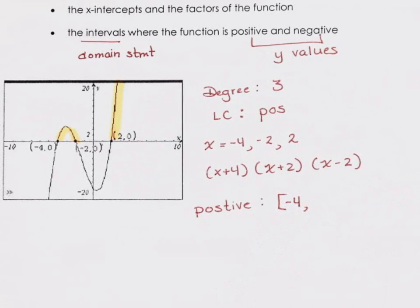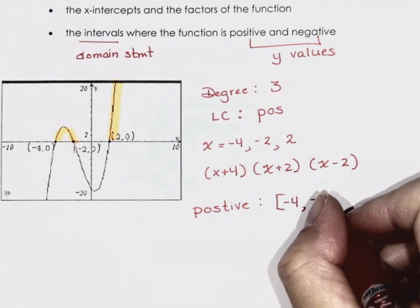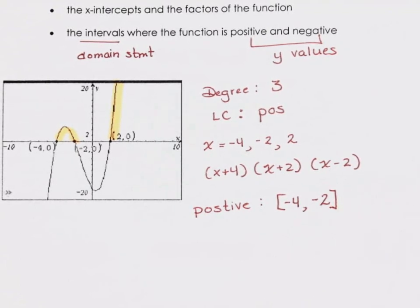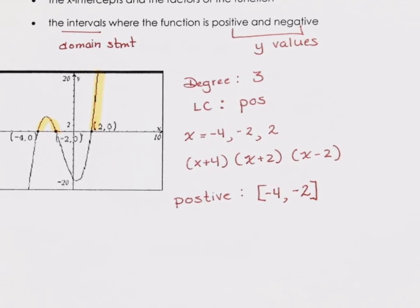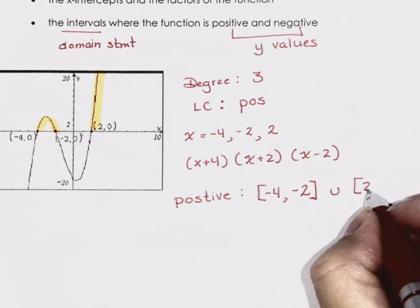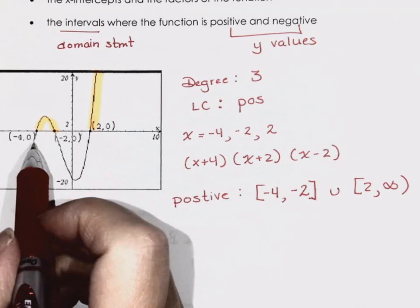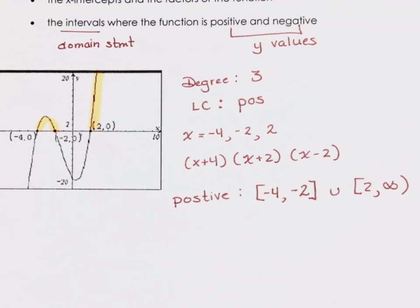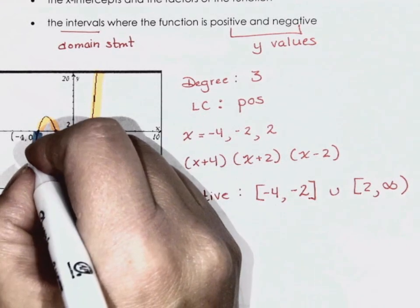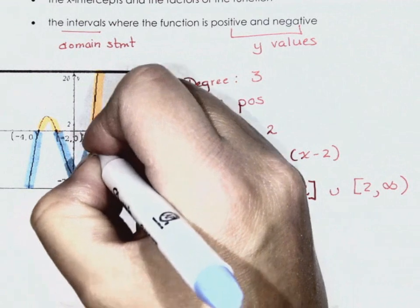Zero is positive — when you have to make a decision, zero is always positive. So I always do positives first because I know they're all going to be square brackets since zero is included. Then my negatives will be the other sections. In interval notation: positive is [−4, −2] union [2, ∞) and negative is the remaining intervals with round brackets.